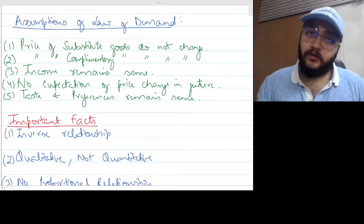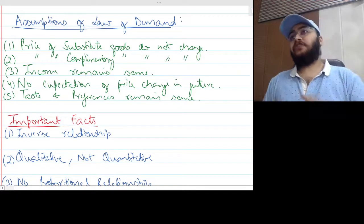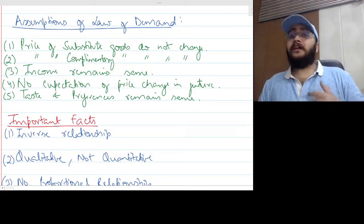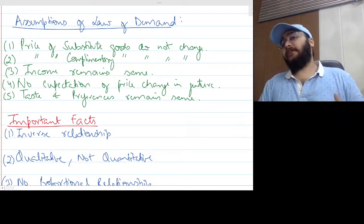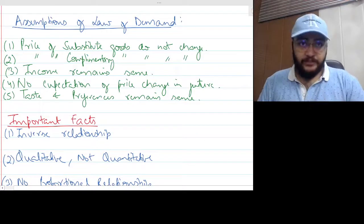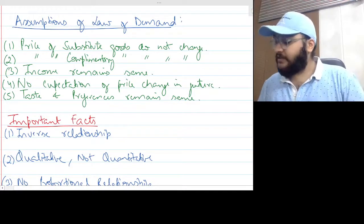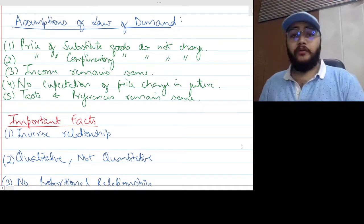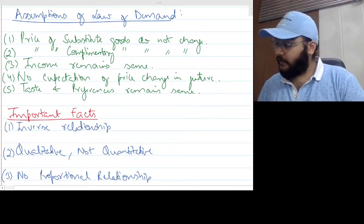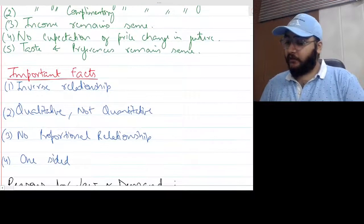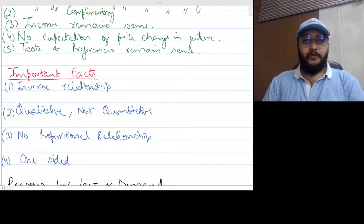What is the simple idea? When you study law of demand, you need to hold the rest of the factors constant. That is why we call them assumptions of law of demand. And keeping those factors constant is called ceteris paribus in Latin. Now we talk about important facts about the law of demand. The first fact is the inverse relationship.